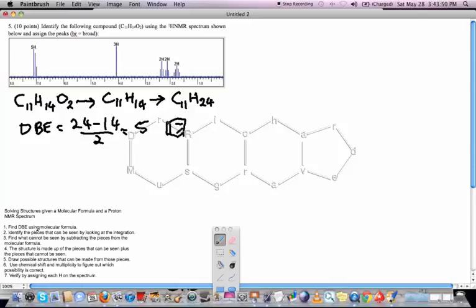That's this step here. Identify the pieces that can be seen. We've got a 5H and it's between 7 and 8 ppm. That means that 5H is in the aromatic region. That tells me I've got an aromatic ring with 5 hydrogens on it. If I've got 5 hydrogens on the ring, that's only going to leave one space for anything else to be connected to it. So we're talking about a mono-substituted aromatic ring. Alright, so just one thing connected to the ring.